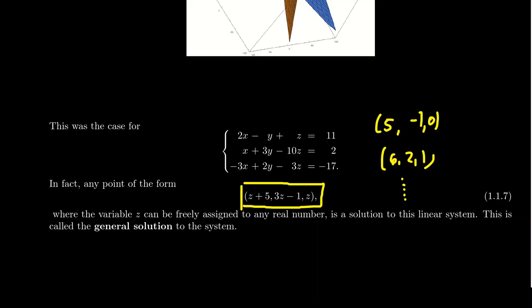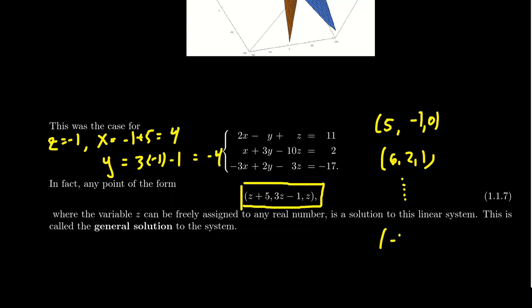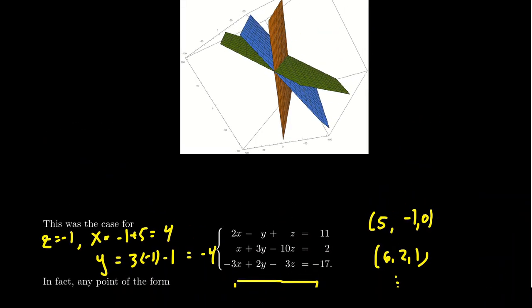We can make up more coordinates on the fly. If we choose z equal to negative 1, that implies x equals negative 1 plus 5, which is 4, and y equals 3 times negative 1 minus 1, which gives us negative 4. So the point (4, -4, -1) is a third point on the intersection of these three planes. That's because the intersection is, in fact, a line — we can pick any point on this line and it will be a solution to the system of equations. This general solution is shown in the yellow box.